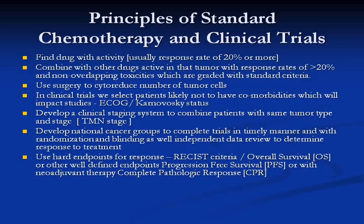Through all this we learned the principles of standard chemotherapy and clinical trials. You find a drug with activity — usually a response rate of 20% or more — combine it with other active drugs with greater than 20% response rates, and importantly, choose agents with non-overlapping toxicities. We grade all toxicities with standard criteria covering everything from hair loss to nausea, constipation, and diarrhea.